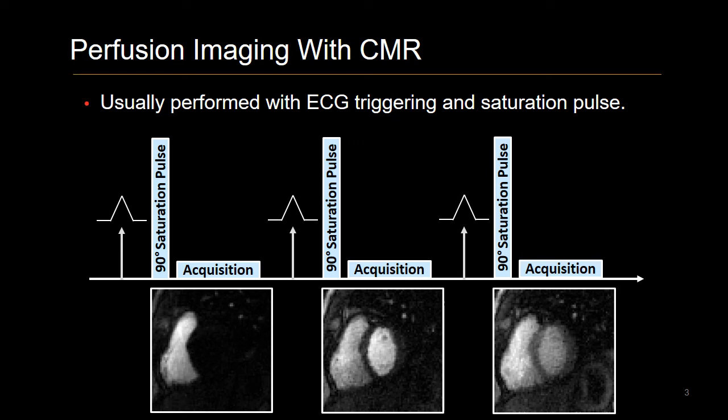Myocardial perfusion imaging with CMR is a non-invasive method for assessing myocardial ischemia. We usually perform perfusion imaging using an ECG-triggered acquisition with a 90-degree saturation pulse followed by a single-shot Cartesian acquisition.